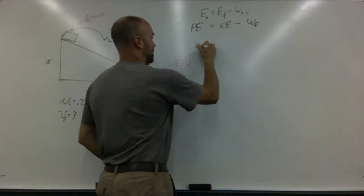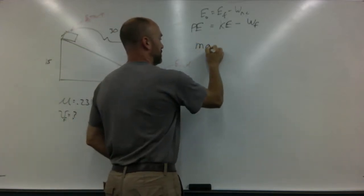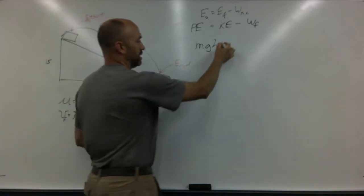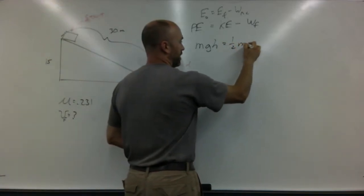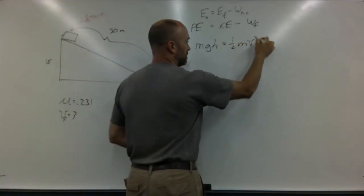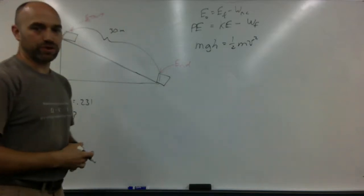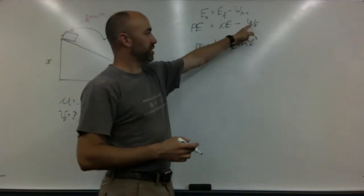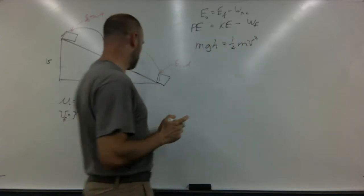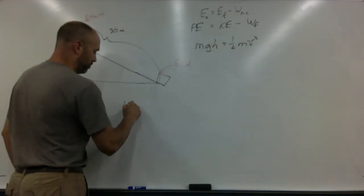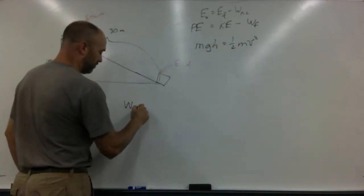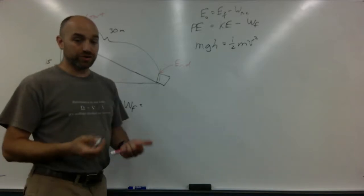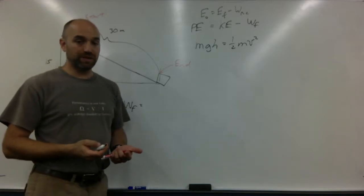Potential energy is mgh. Kinetic energy is one-half mv squared — just get those right off your equation sheet. And then this work done by friction, that's the tricky one. Work done by friction — well, work is always force times distance.